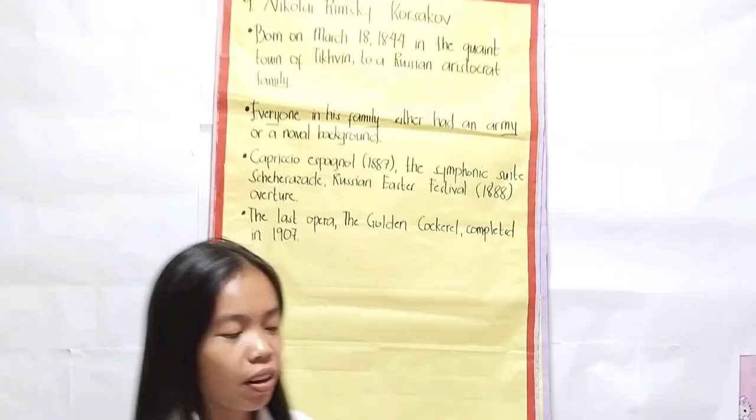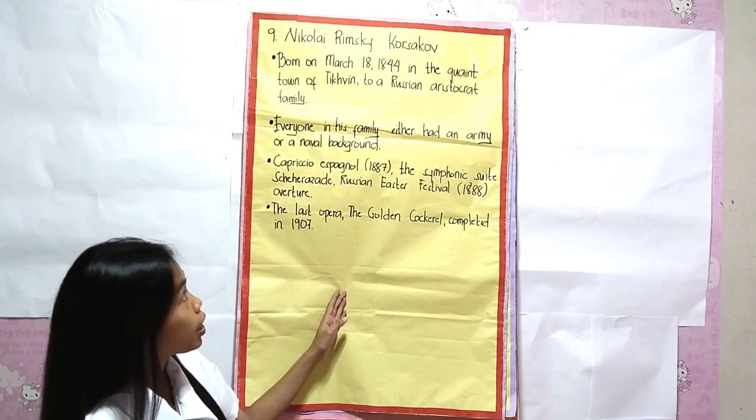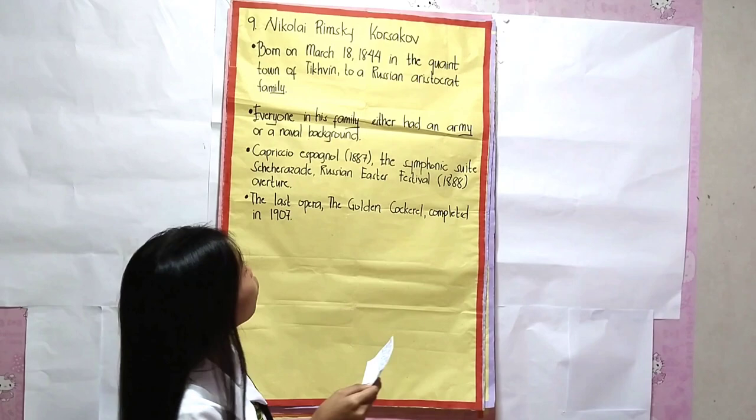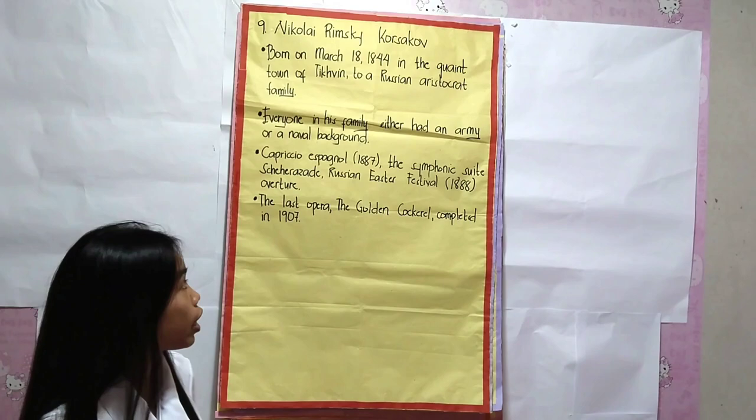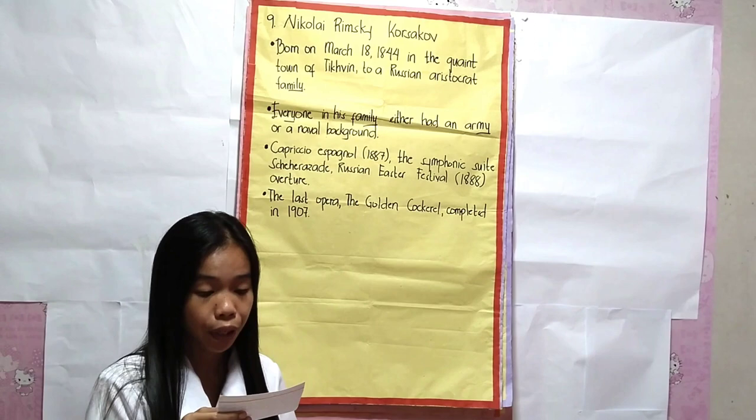Another musician of the Romantic period is Nikolai Rimsky-Korsakov. He was born on March 18, 1844 in the town of Tikhvin. Everyone in his family either had an army or naval background. He was not just the Mighty Handful's most influential member, but was also considered one of the greatest orchestrators of all time.